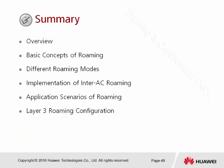So this is an overview of what was covered in this roaming topic: the basic concept of roaming, why we need roaming, the different roaming modes — layer two and layer three — and for layer three, the different forwarding modes such as direct forwarding or tunneling forwarding mode. We also looked at implementation of inter-AC roaming, application scenarios, and finally an example of layer three roaming configuration.